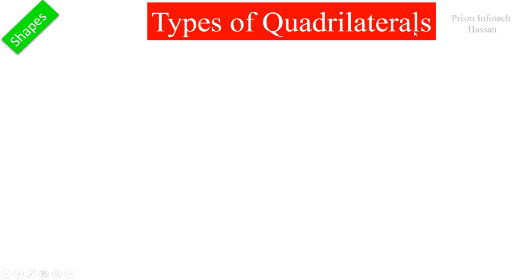Next, let us move on to quadrilaterals. Quadrilaterals means a shape that consists of four sides, so such shapes are called quadrilaterals. Let us move on to types of quadrilaterals.